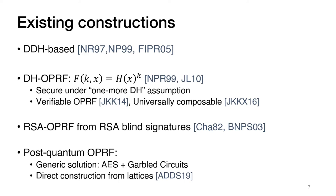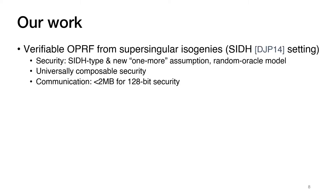Constructing a post-quantum secure oblivious PRF is more challenging. One approach is to evaluate AES using a generic two-party secure computation protocol such as garbled circuits instantiated with a post-quantum secure oblivious transfer. And recently, Albrecht et al. gave a direct construction from lattices. In this work, we construct oblivious PRFs from isogenies. Our first construction is a verifiable OPRF from supersingular isogenies in the SIDH setting, proved secure in the random oracle model from standard SIDH-type assumptions as well as a new one-more assumption. Our security proofs are in the universally composable framework, and we estimate the communication cost to be under two megabytes for 128-bit security.